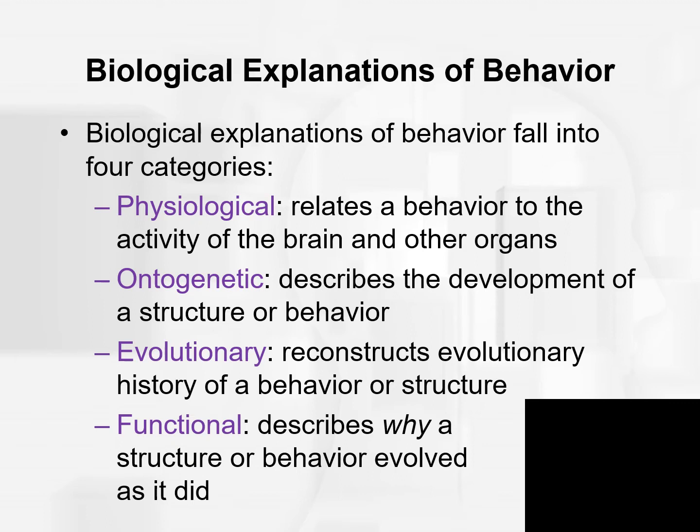The biological explanations of behavior fall into four major categories. The first one Kalat mentions is physiological. A lot of the time we will be giving these kinds of physiological explanations where we're relating behavior, thought, and so forth to the activity of the brain and other organs. This includes anything from discussing brain anatomy, anything about the nervous system, the release of neurotransmitters, hormones, all of that.